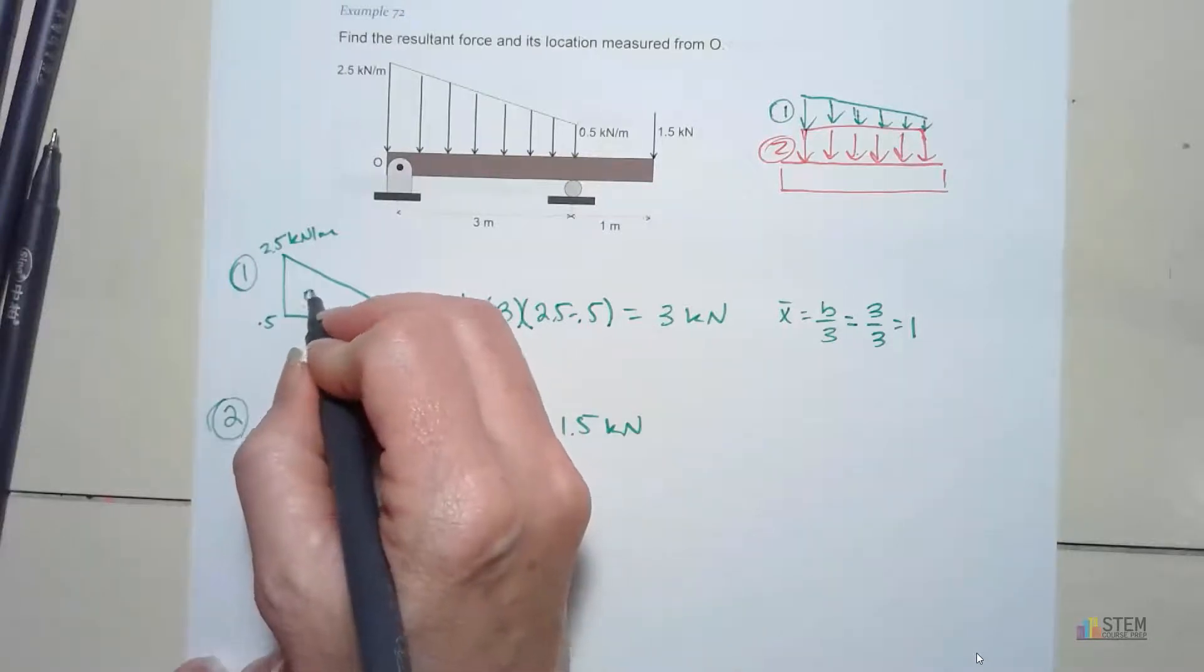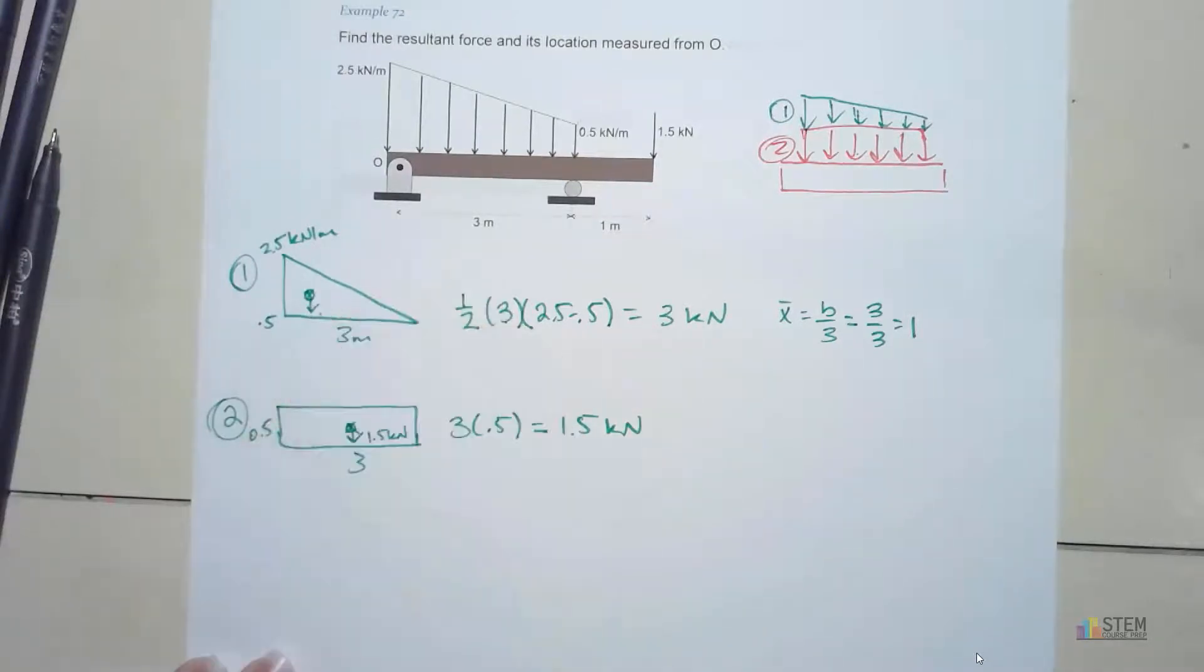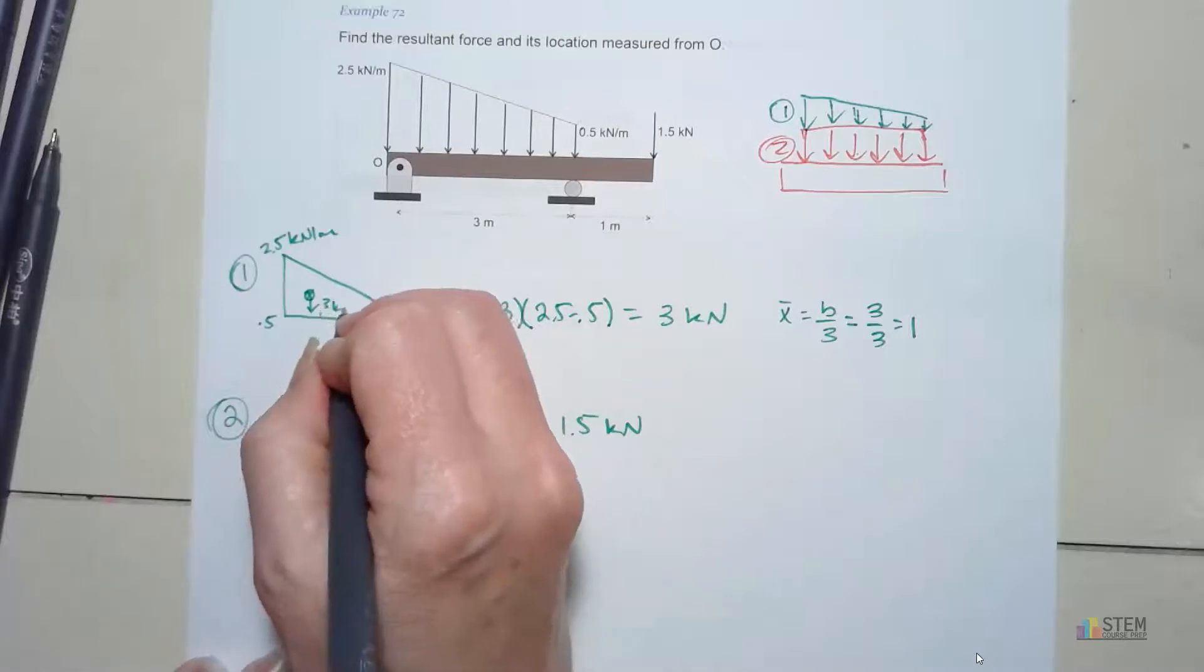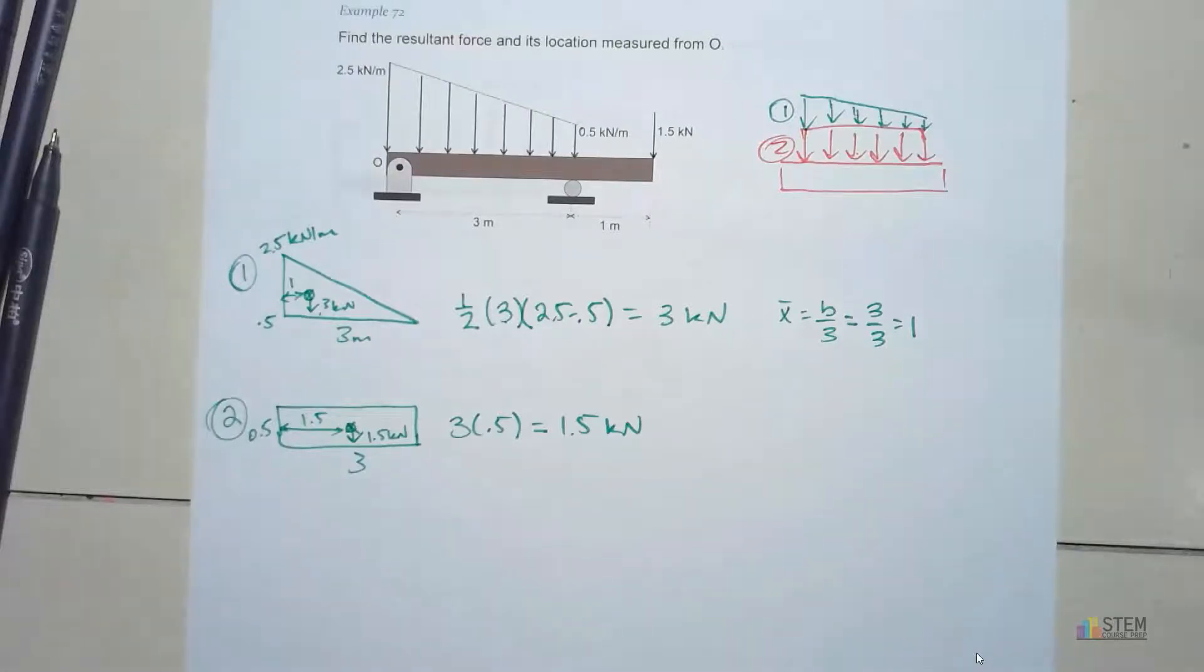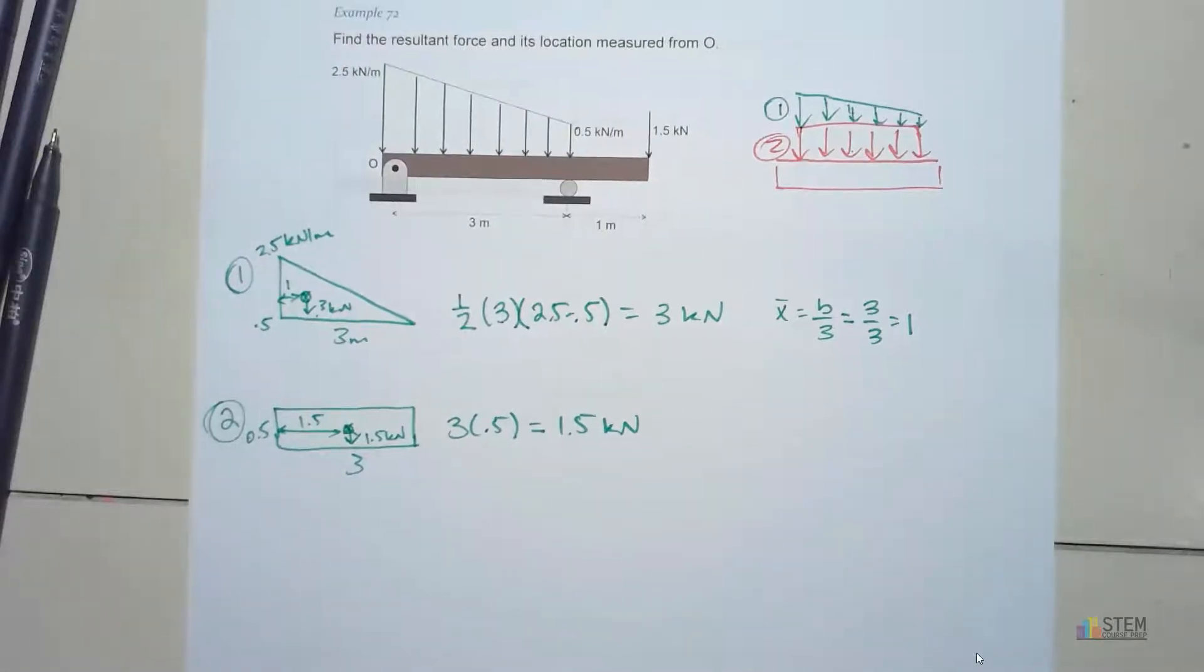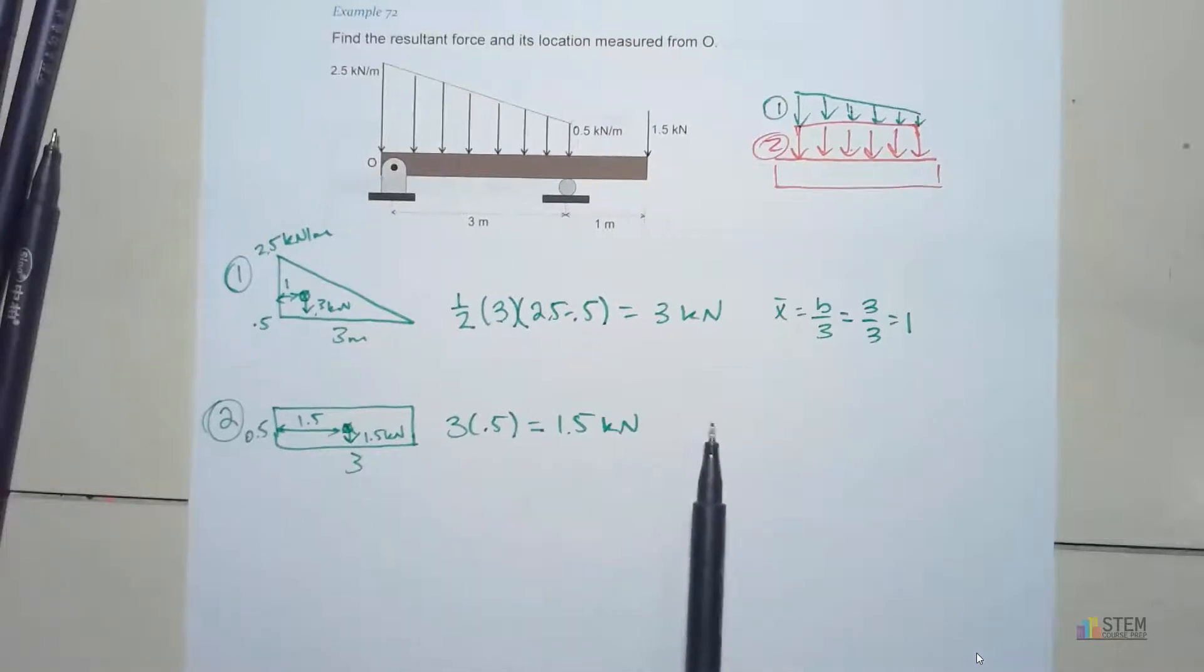So let's just put it right here. That's going to be that 3 kilonewton force. And that distance was 1. And this one, we forgot to write it down, that's 1.5. Okay, so now we have that. So this is why I think it's easier to do this topic after you cover centroids. I don't know why the textbooks cover it before they even cover centroids.